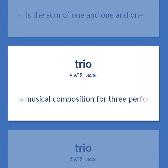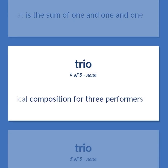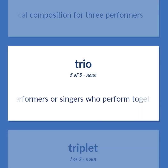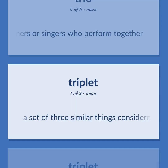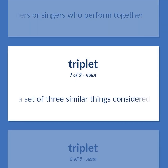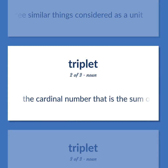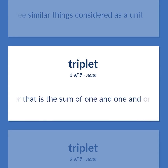Trio: A musical composition for three performers. Three performers or singers who perform together. A set of three similar things considered as a unit. The cardinal number that is the sum of one and one and one.